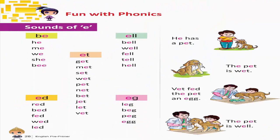Fun with phonics — Sounds of E. Be, He, Me, We, She. E-T: Get, Met, Set, Wet, Bet, Net, Jet, Let. E-LL: Bell, Well, Fell, Tell, Hell. E-D: Red, Bed, Fed, Wed, Led. E-G: Leg, Peg, Egg. Sentences: He has a pet. The pet is wet. The pet is well.